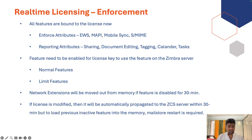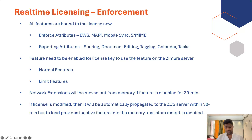In the new real-time licensing there are two kinds of attributes: post attributes and reporting attributes. Post attributes are enforced — unless that attribute is enabled with some limit, you are not allowed to use that feature; for example, EWS, MAPI, mobile sync, S/MIME — you must have those attributes enabled to use that feature. Reporting attributes are not enforced — you are free to use them, but their usage will be calculated.